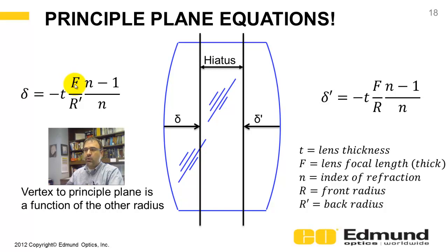Divided by the back radius of curvature, times index minus one divided by index. And there is a negative sign here.